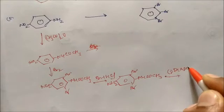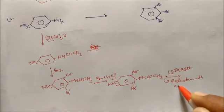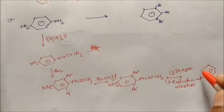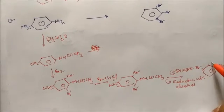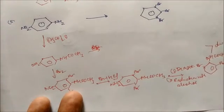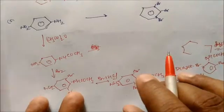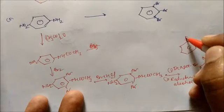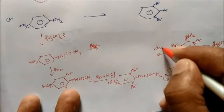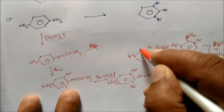Do diazotization with NaNO2/HCl, then reduction with alcohol. This replaces the diazonium group. Then hydrolysis removes the NHCOCH3 protecting group, releasing acetic acid and giving the free amine. Again do diazotization — NH2 converts to N2Cl diazonium salt with two Br groups remaining.